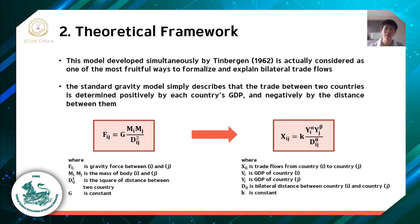The theoretical framework covers the microeconomic fundamentals of the gravity model. This model, developed by Tinbergen in 1962, is considered one of the most effective ways to formalize and explain bilateral trade flows. The standard gravity model describes trade between two countries as determined positively by each country's GDP and negatively by the distance between them.